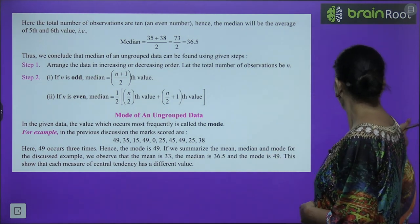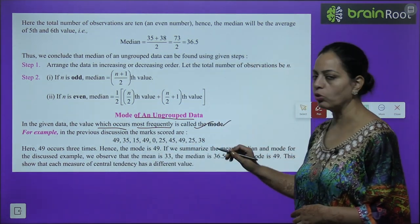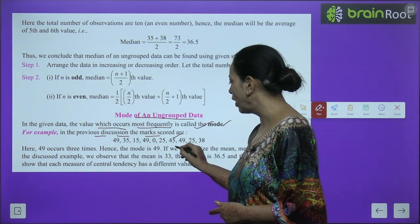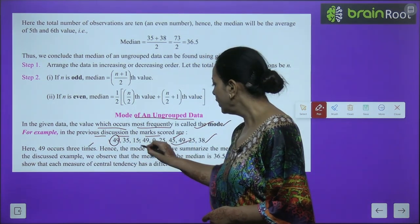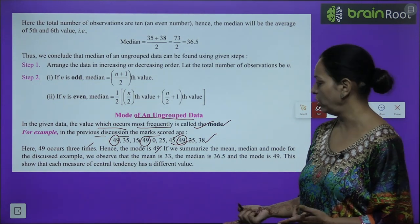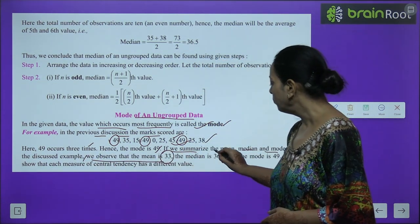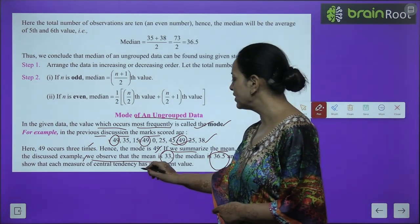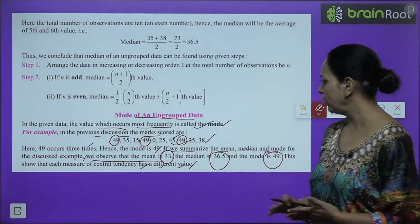The mode of ungrouped data: the value which occurs most frequently in the given data is called the mode. In our previous example, 49 occurs 3 times — hence the mode is 49. Summarizing: for the discussed example, mean is 33, median is 36.5, and mode is 49. This shows that each measure of central tendency has a different value — mean, median, and mode will all be different.